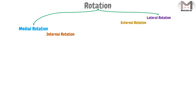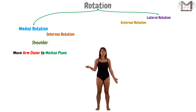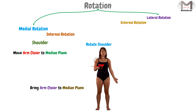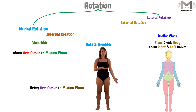To explain the medial rotation or the internal rotation, we will take the shoulder as an example. In the medial rotation of the shoulder, we will move the arm closer to the median plane — that means we will firstly rotate the shoulder, and as a result, bring the arm closer to the median plane. The median plane, as we explained in a previous video, is the plane that divides the body into two equal halves, right and left.